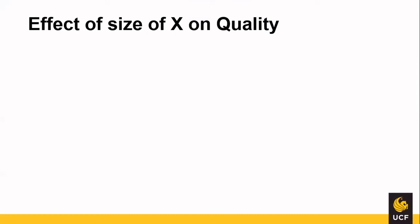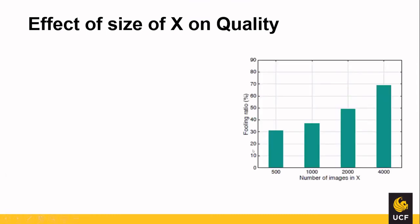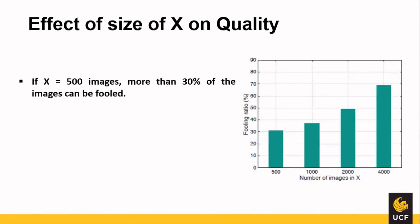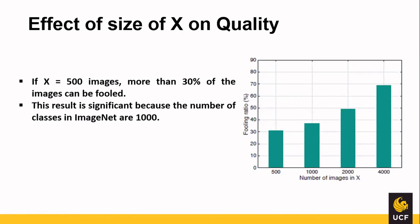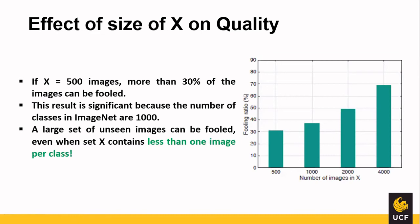They evaluated whether the size of set X impacts result quality. The x-axis represents the number of images and the y-axis represents the fooling ratio. With only 500 images, the fooling rate exceeds 30%, and it improves as the number increases. The 30% rate is significant because ImageNet has 1,000 classes, meaning 500 images is less than one image per class. If you want to improve the fooling rate, you can increase the size of set X.